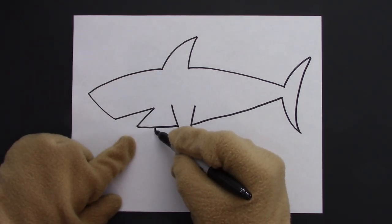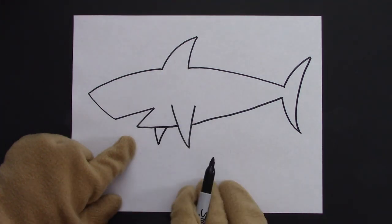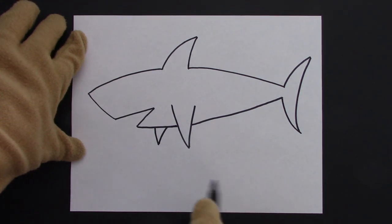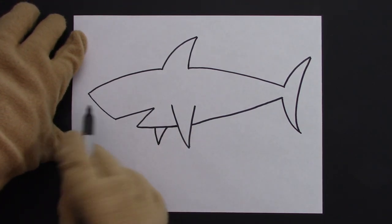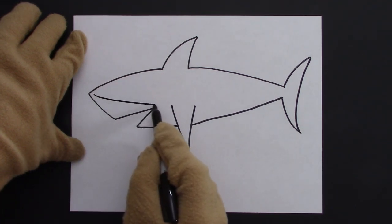Now sharks tend to be dark on top, light on the bottom. So let's draw a line separating those from the nose all the way to the pectoral fin, and then from the pectoral fin all the way to the tail, just like that.